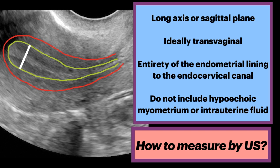This sagittal endovaginal ultrasound shows a female during the late proliferative phase of her menstrual cycle. There are three hyperechoic longitudinal lines separated by the hypoechoic endometrium, outlined in yellow, surrounded by the junctional zone, outlined in red, which appears as a subendometrial hypoechoic line. The white line represents endometrial thickness.